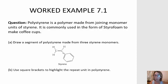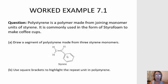There are two carbons in the styrene monomer. One carbon is bonded to two hydrogens, and one carbon is bonded to a hydrogen and also a benzene ring.